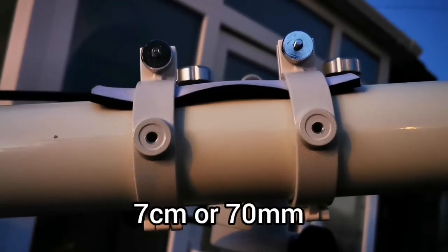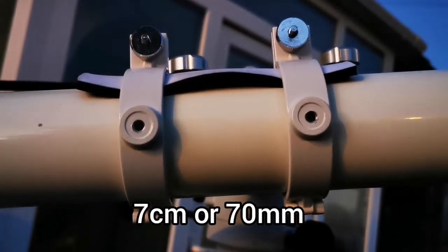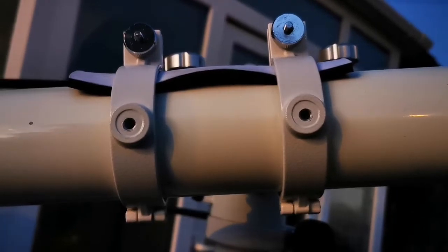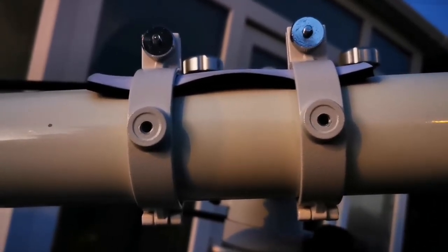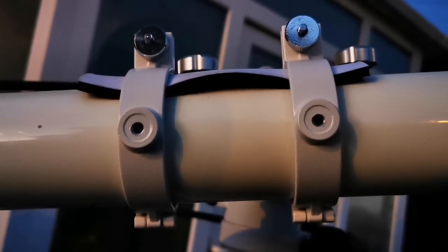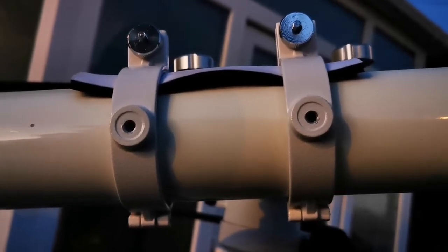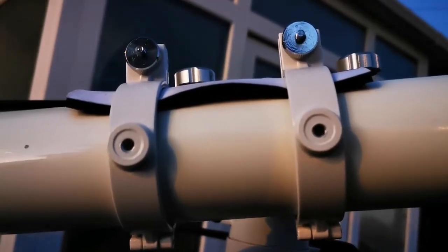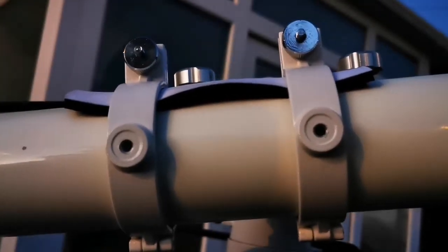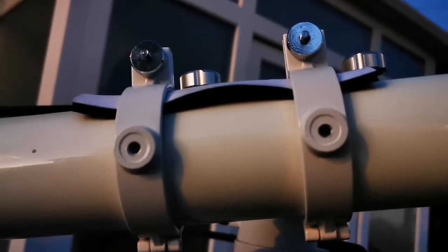The external diameter of the tube is 7cm or 70mm. I used the tube rings and the dovetail mount for the Skywatcher ED-72 apochromatic telescope with an adapted mouse pad. It's a foam one and it just fits like that.